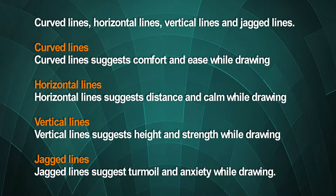The various types of lines represent various psychological responses. The way one draws a line shows the different qualities represented by the artist. A keen observer can develop an idea with regard to the context, emotion and reflections an artist had while drawing a line. There are four categories of line: curved lines, horizontal lines, vertical lines and jagged lines. Curved lines suggest comfort and ease; horizontal lines suggest distance and calm; vertical lines suggest height and strength; jagged lines suggest turmoil and anxiety.